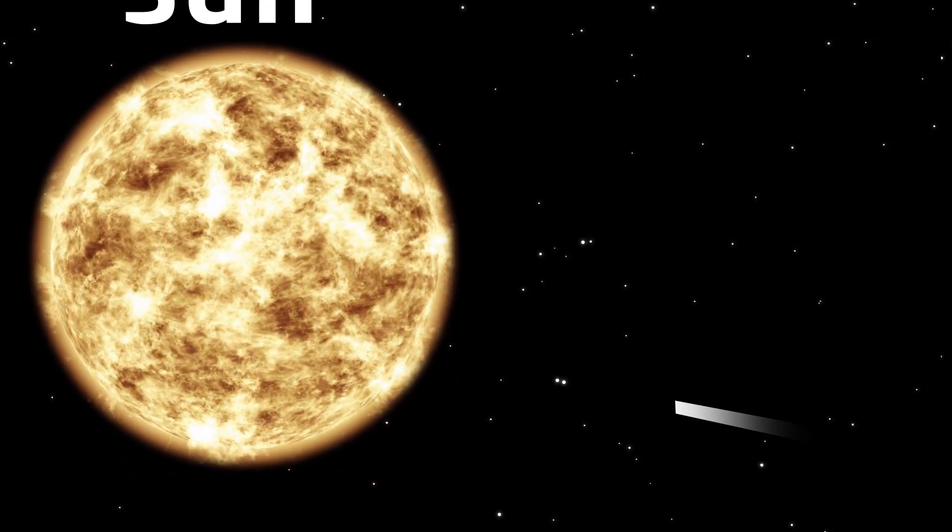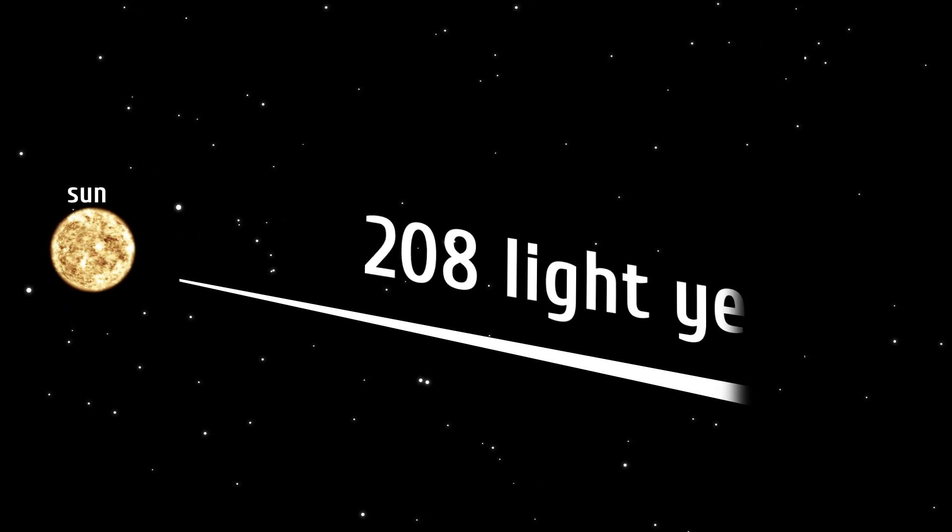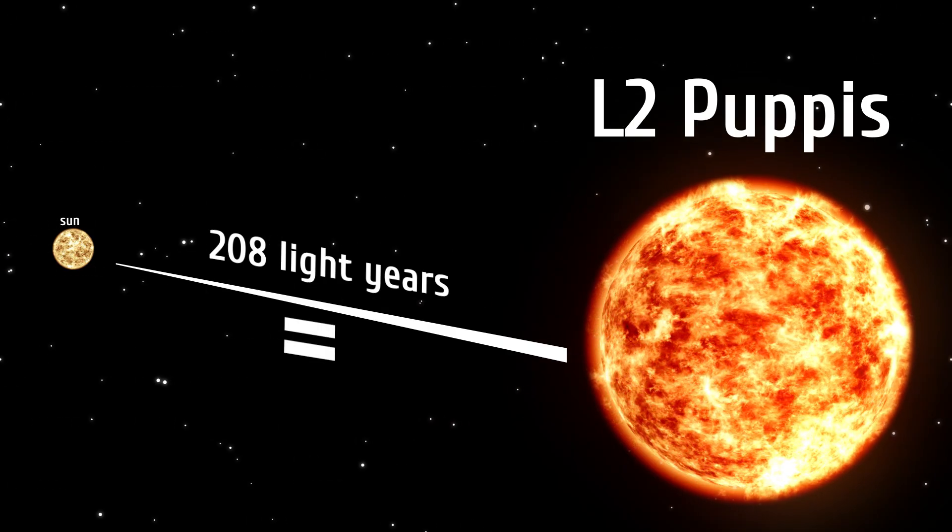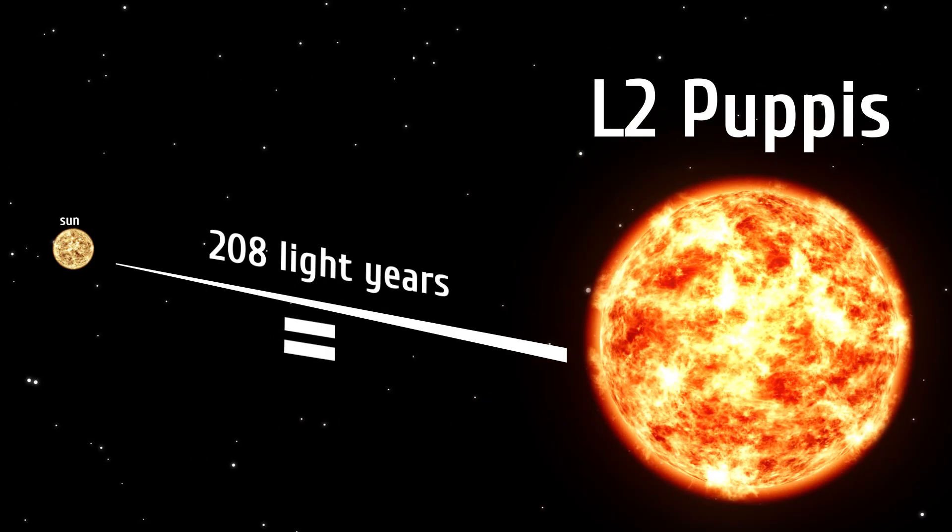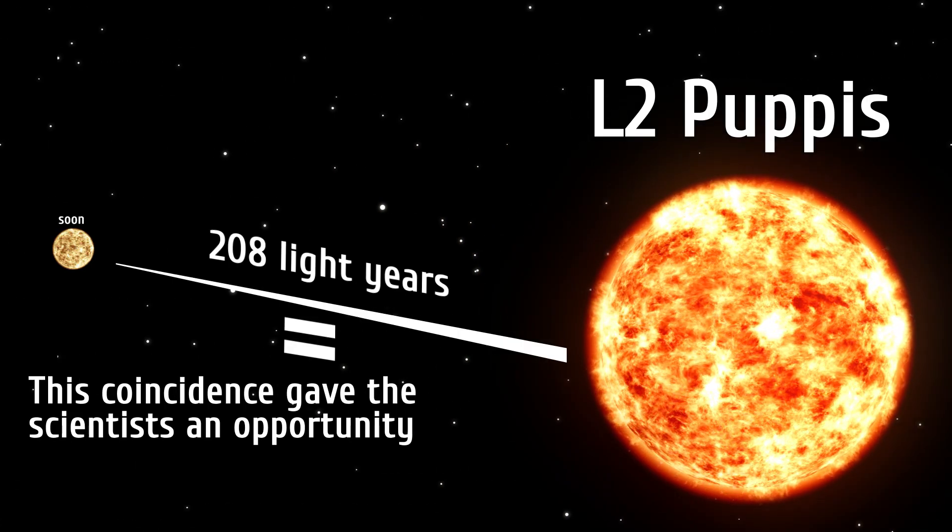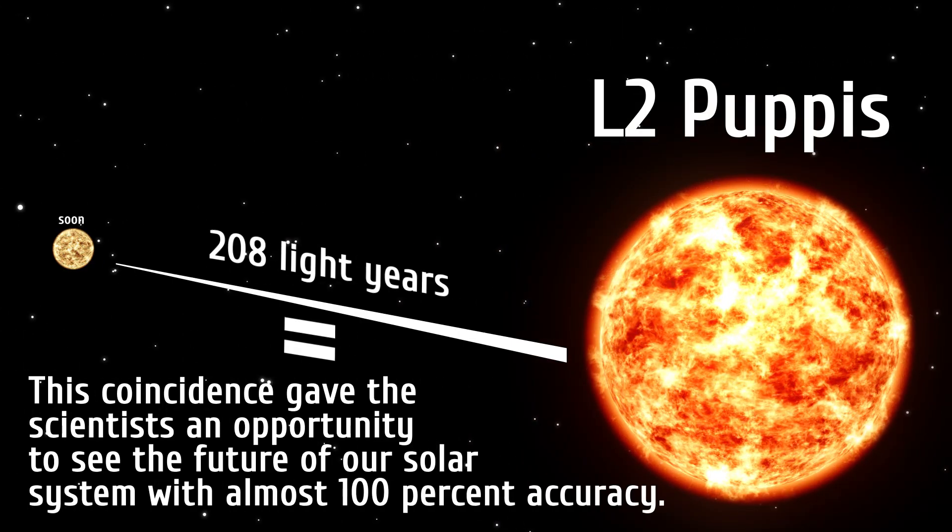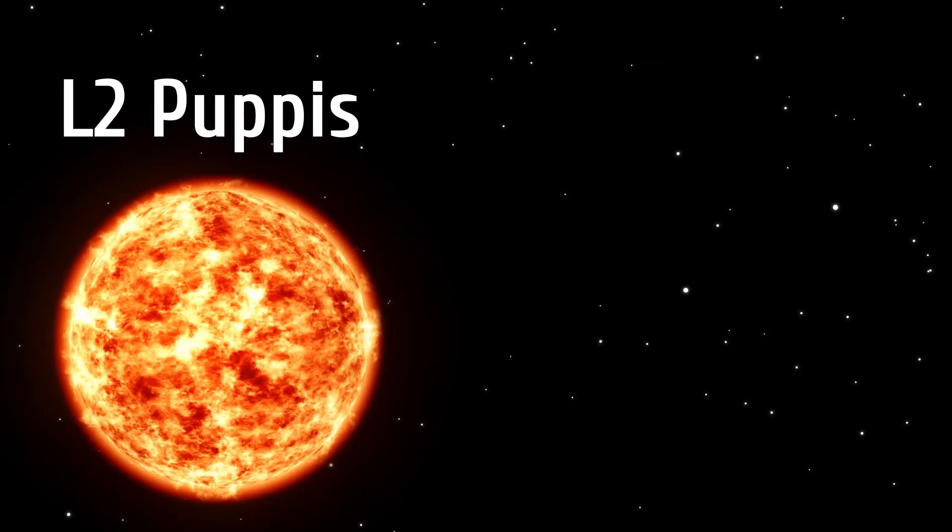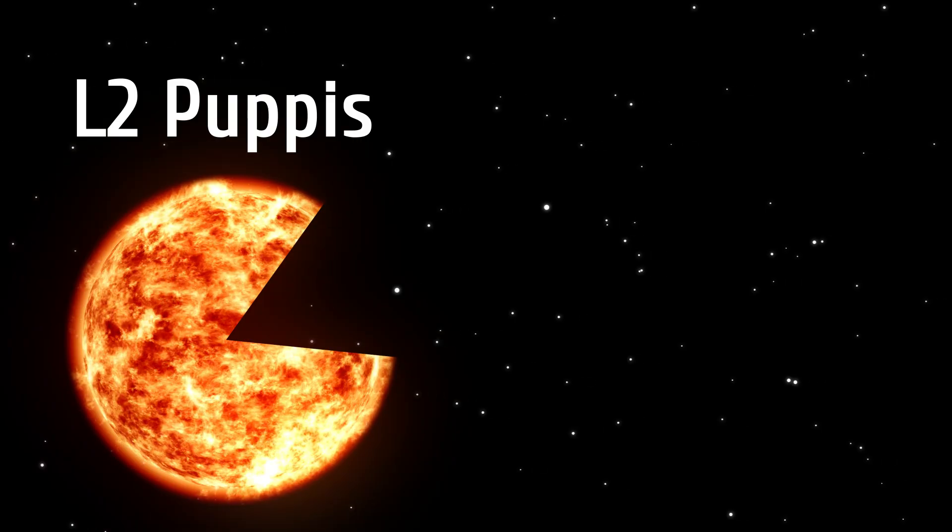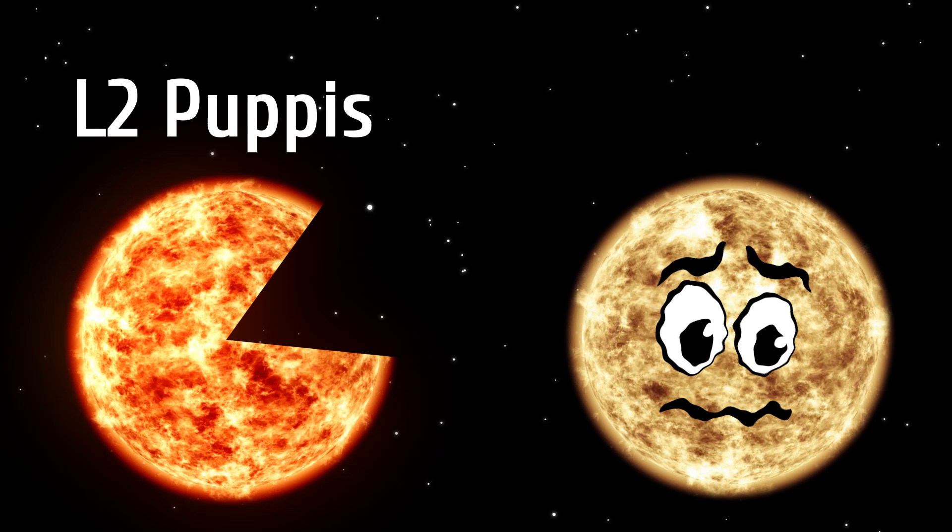They explained that 208 light-years away from us, there's a remote star called L2 Puppis. Several billion years ago, this star looked exactly like our Sun does nowadays, with the same mass and similar characteristics. L2 Puppis gave the scientists an opportunity to see the future of our solar system with almost 100% accuracy. L2 Puppis is pretty old – about 10 billion years old, to be exact. Over its very long lifetime, the star lost a third of its mass. And that's the exact fate awaiting our Sun, too.